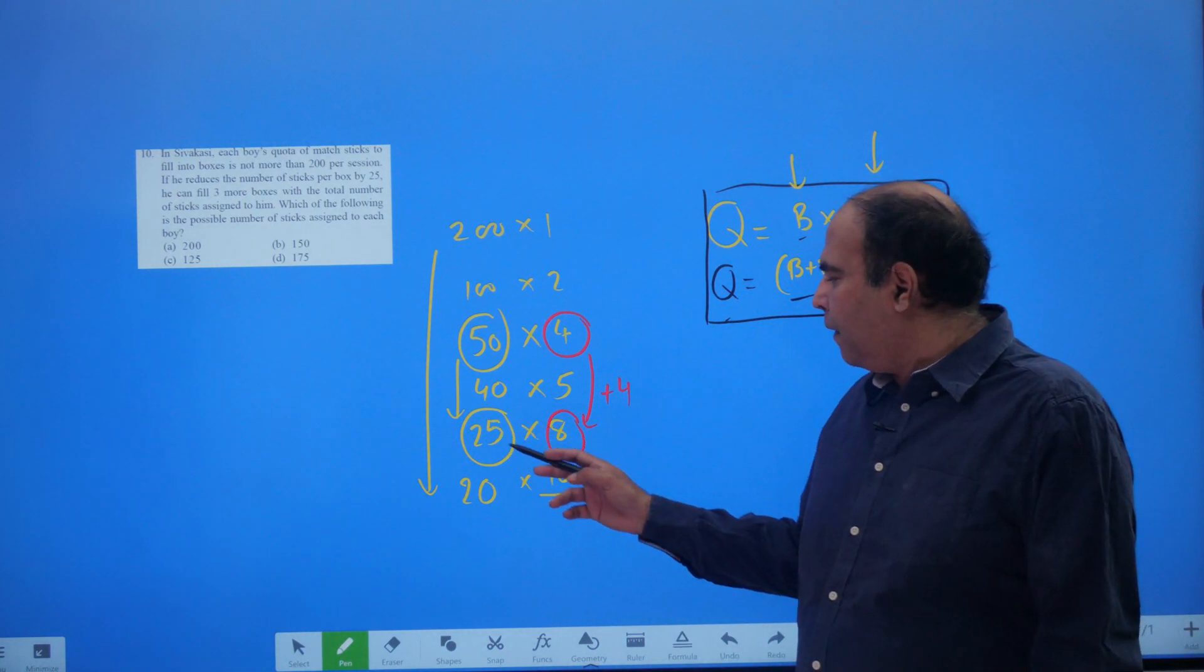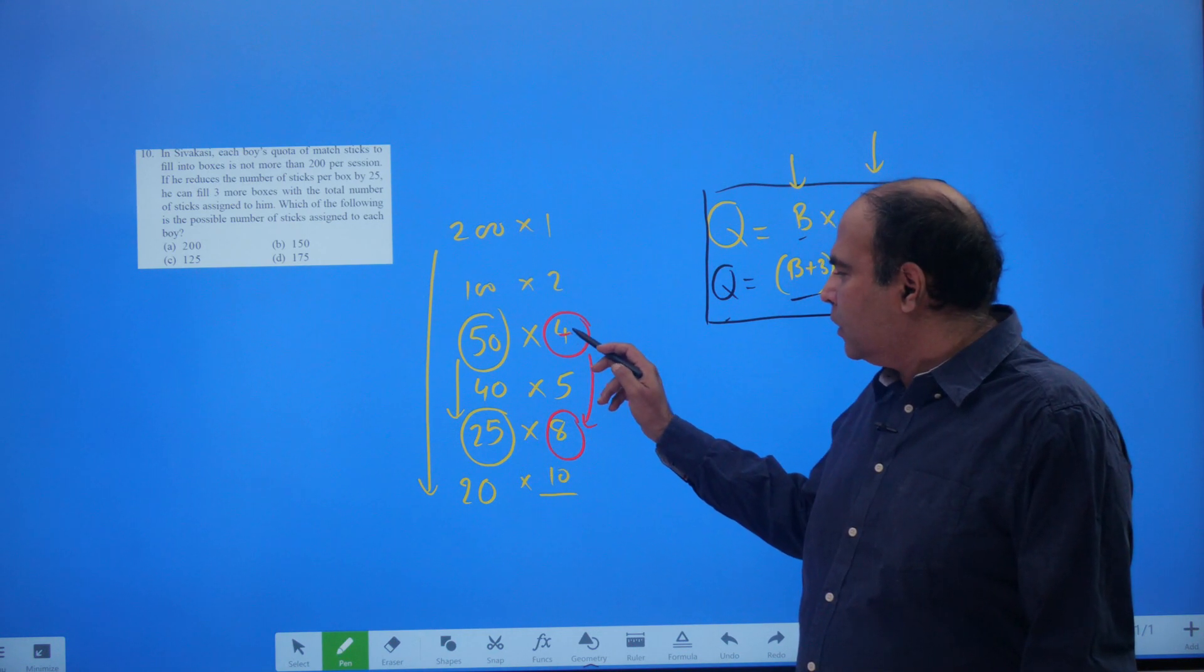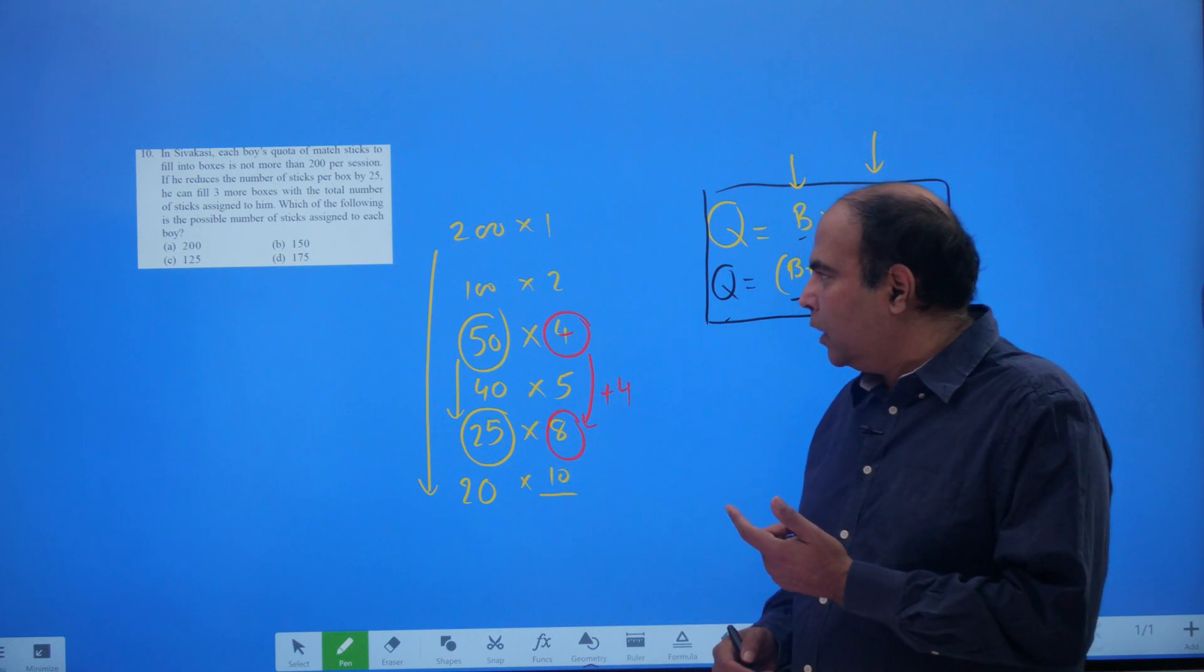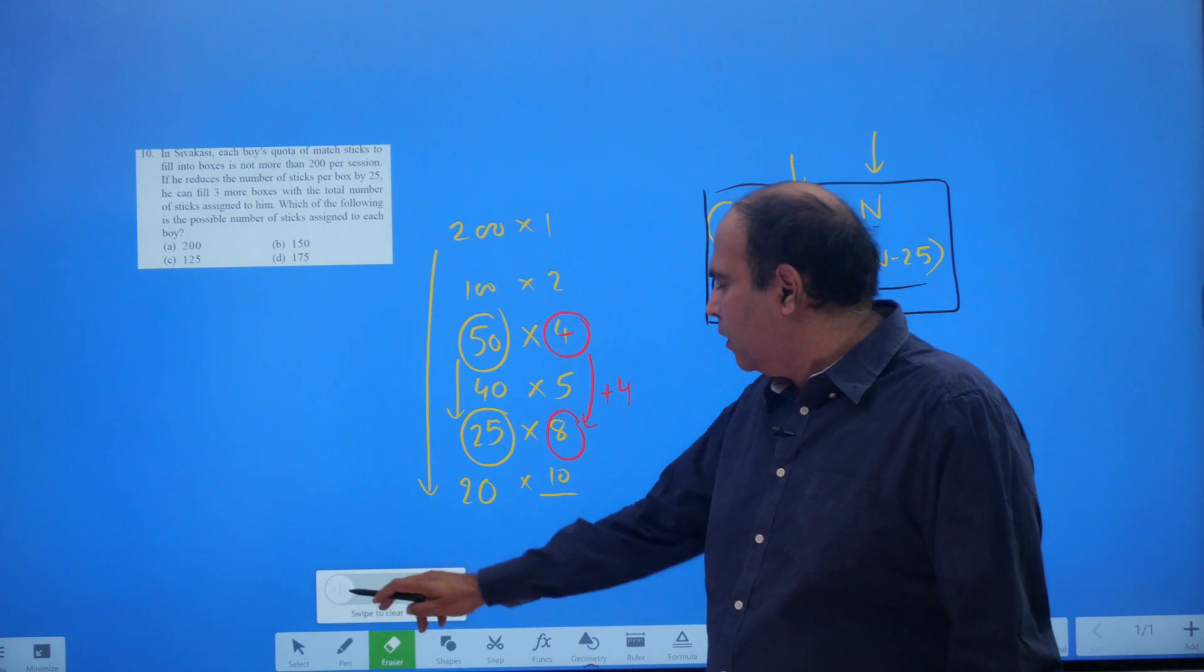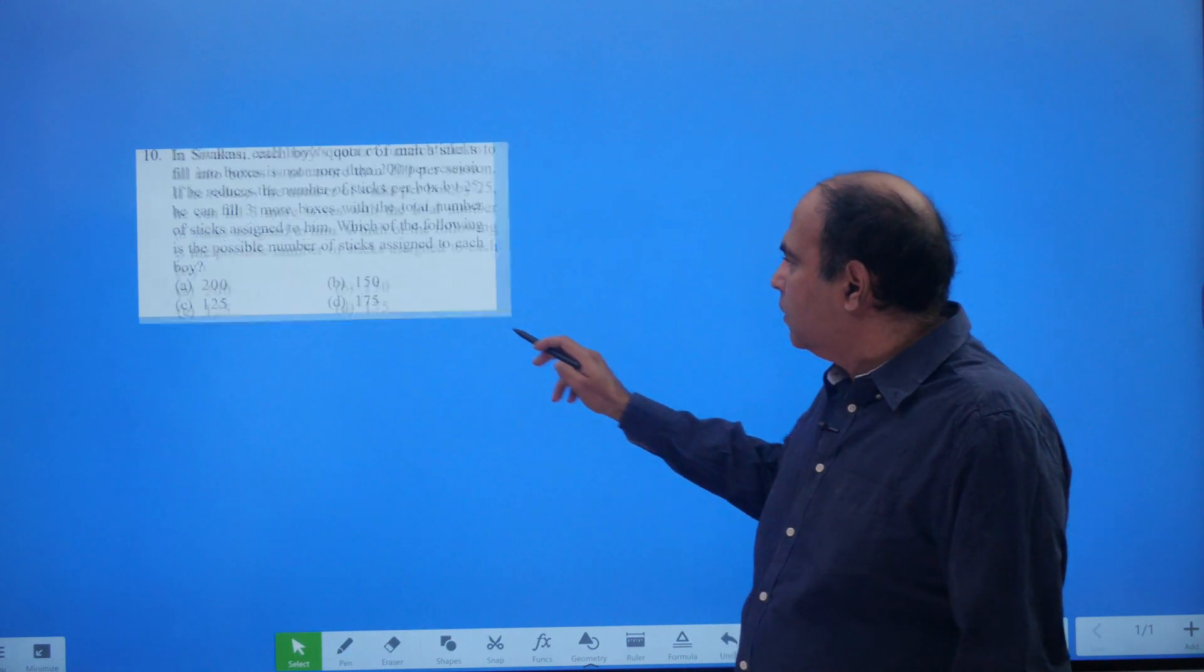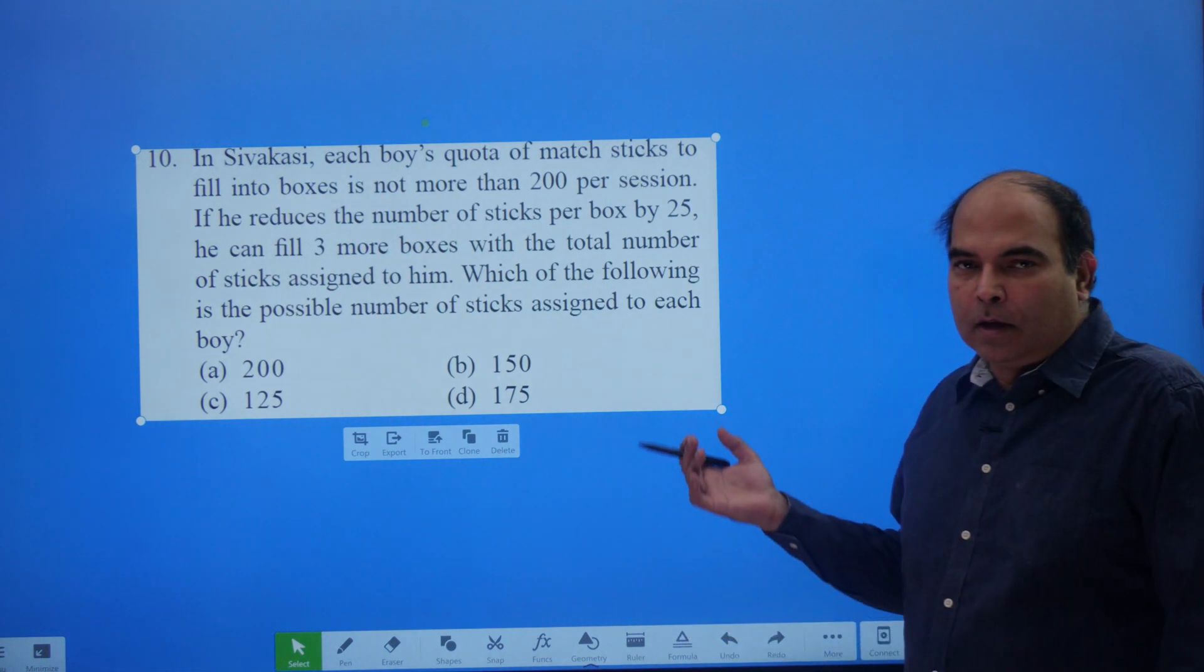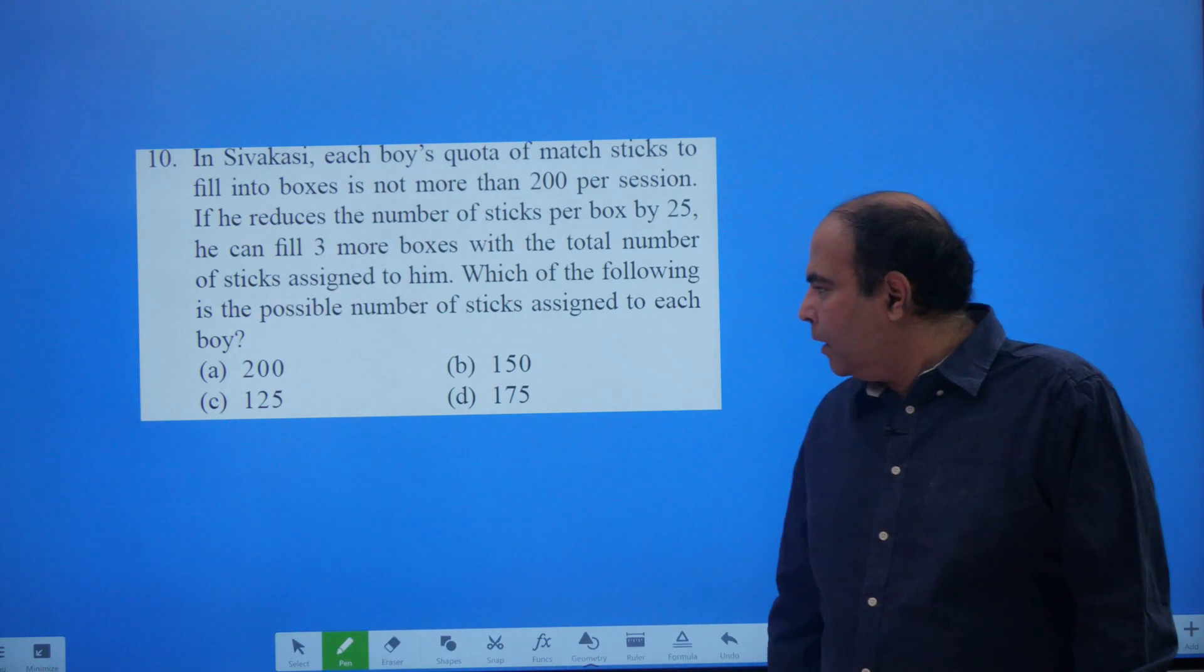So if I am filling 8 boxes at 25 sticks per box, I would have filled 4 boxes at 50 sticks per box. And this does not work because it goes against what the problem has told me. So if I go back to the problem, what the problem is telling me very clearly is that the number of boxes goes up by 3 when the number of sticks per box comes down by 25. So that's how a wrong option is eliminated.